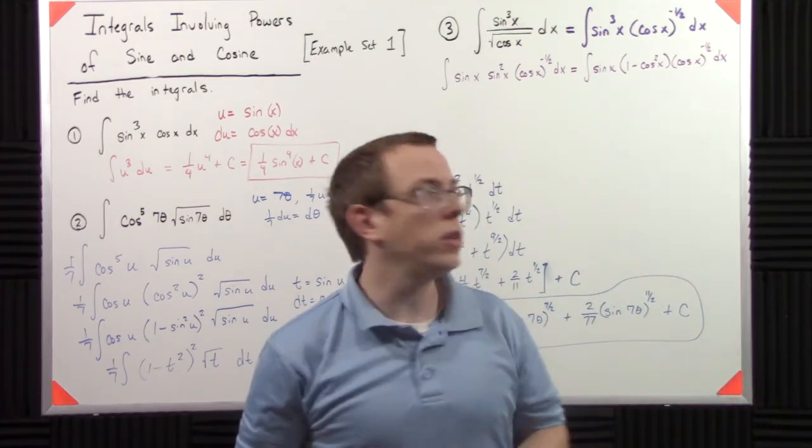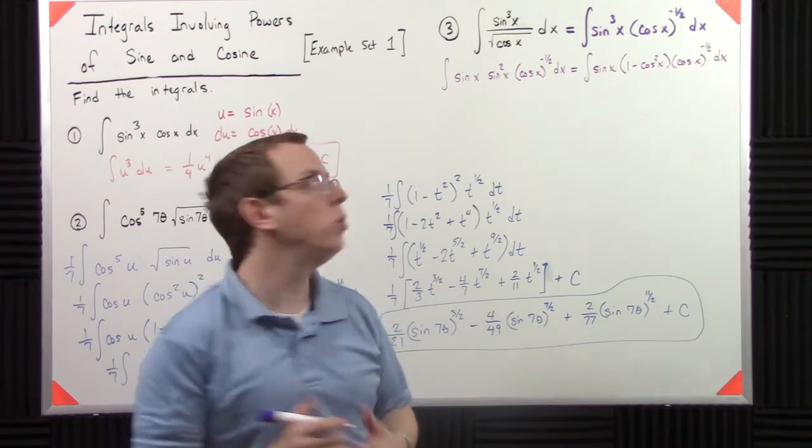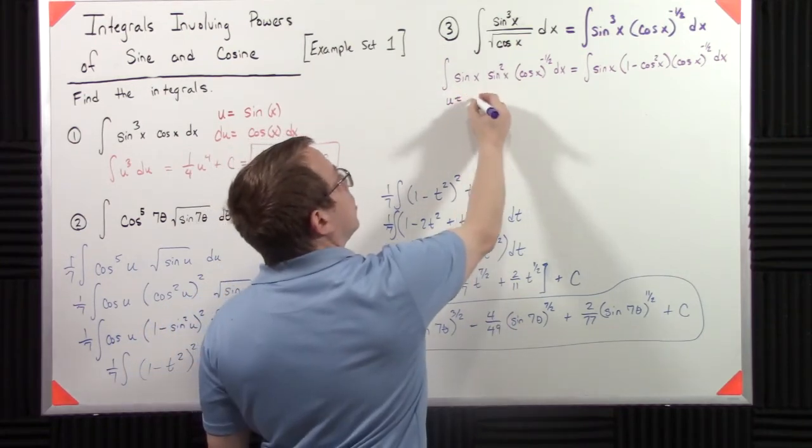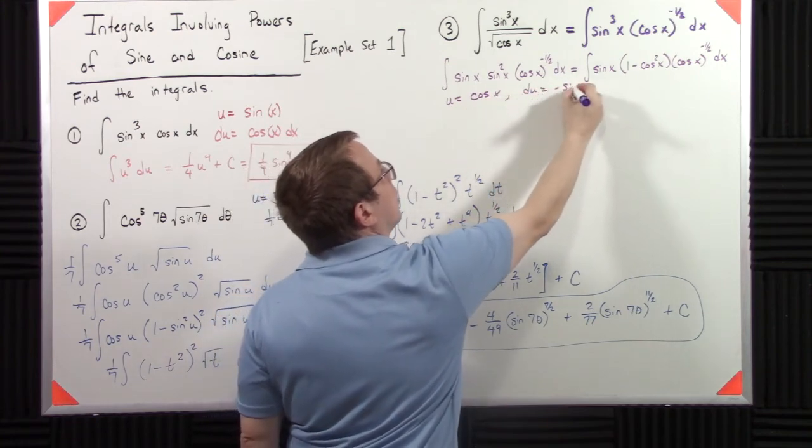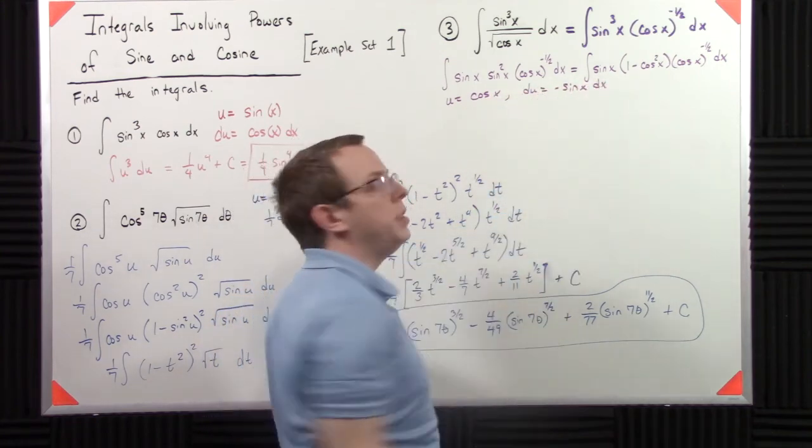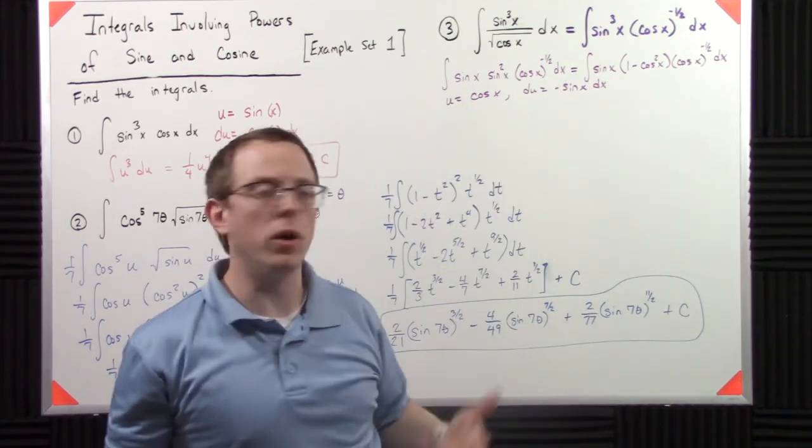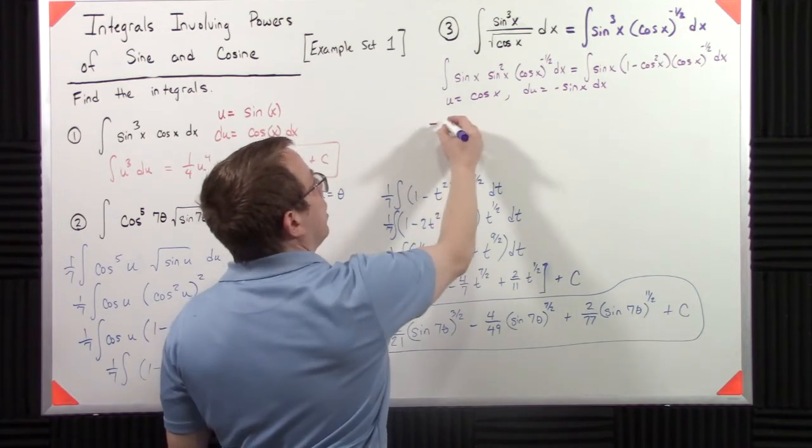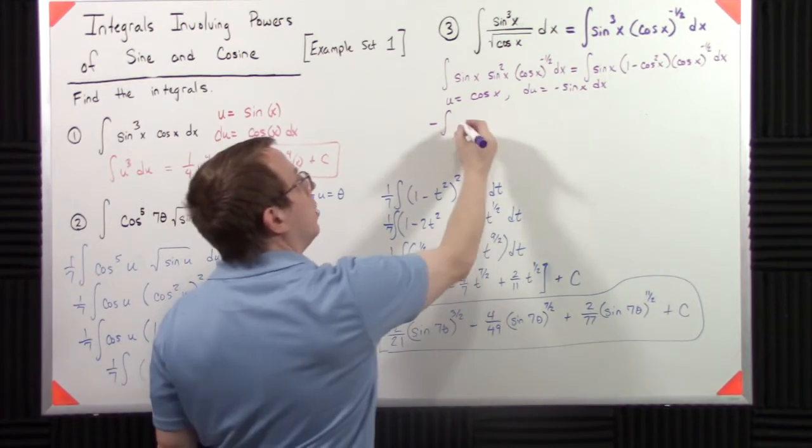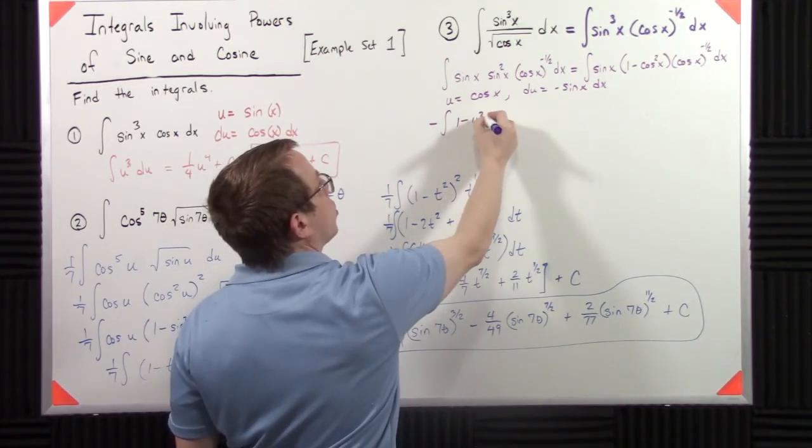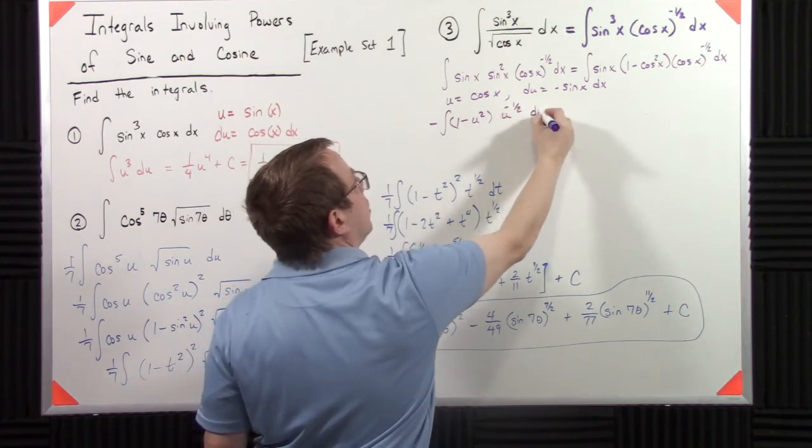So, now what I have is I have a dangling sine, I have one here, and then everything else is cosines. So, that allows me to take my u to be cosine of x, du is negative sine of x dx. So, then when I make the substitution, I'm going to get a negative out front, but I get negative, so the sine x dx gets absorbed, so that's going to be my du. So, I have one minus u squared times u to the negative one-half du.